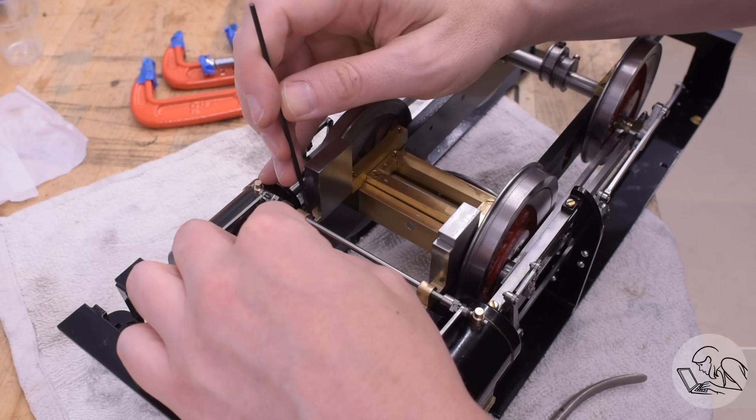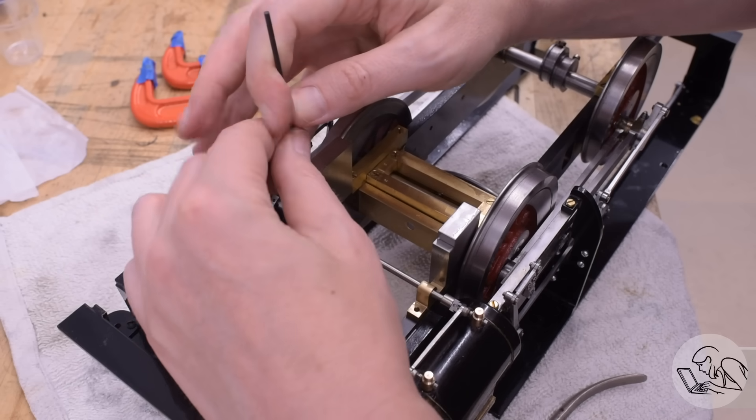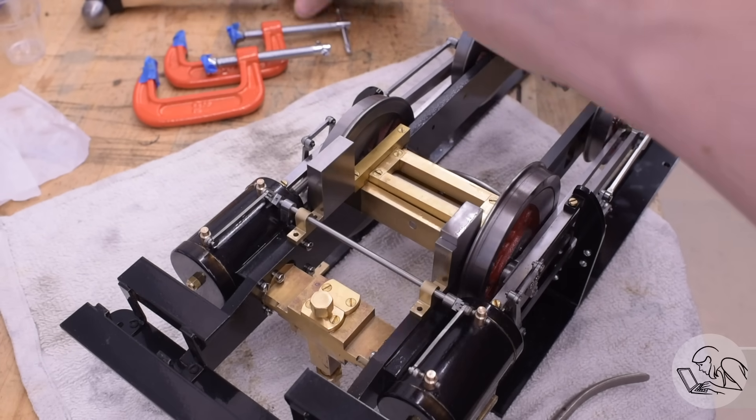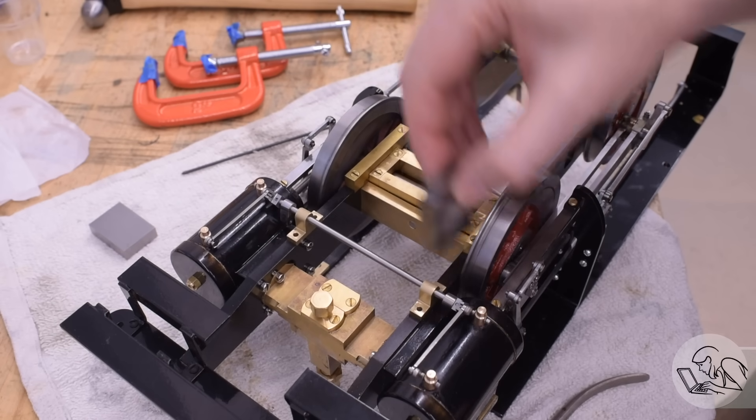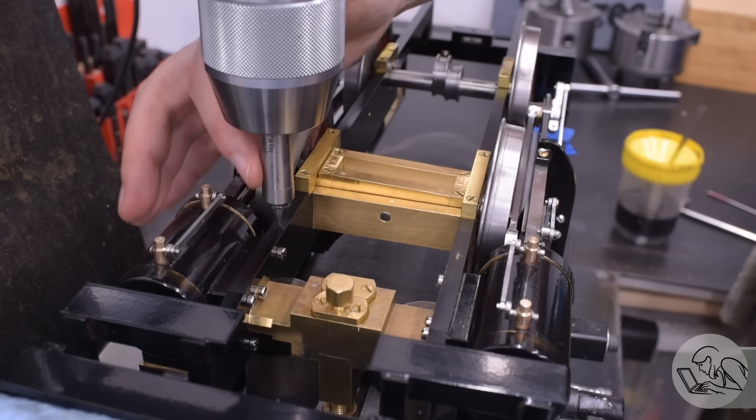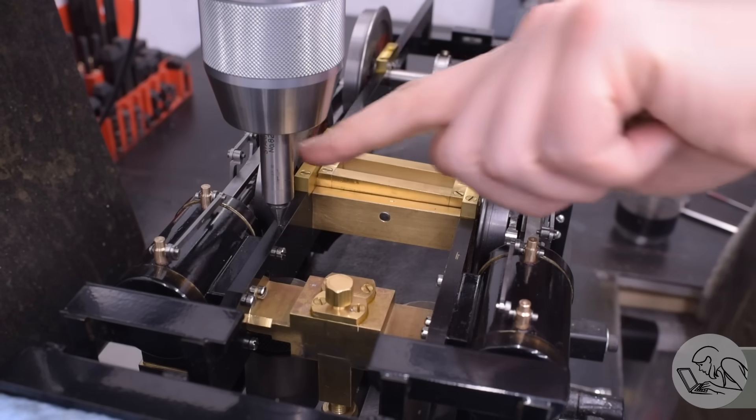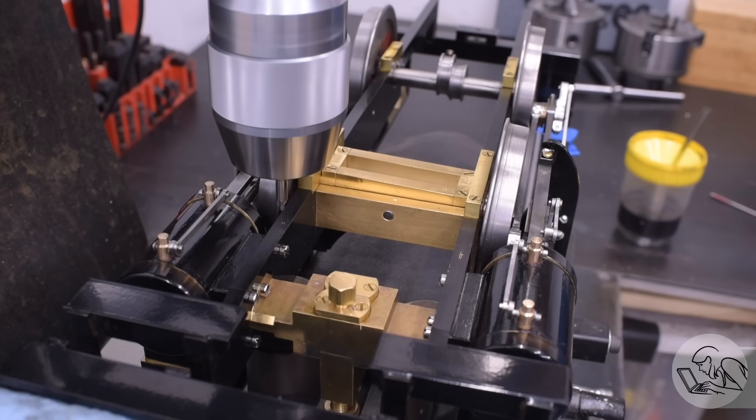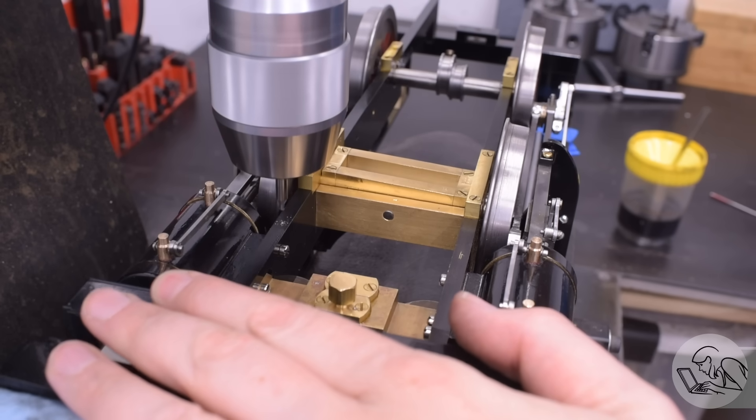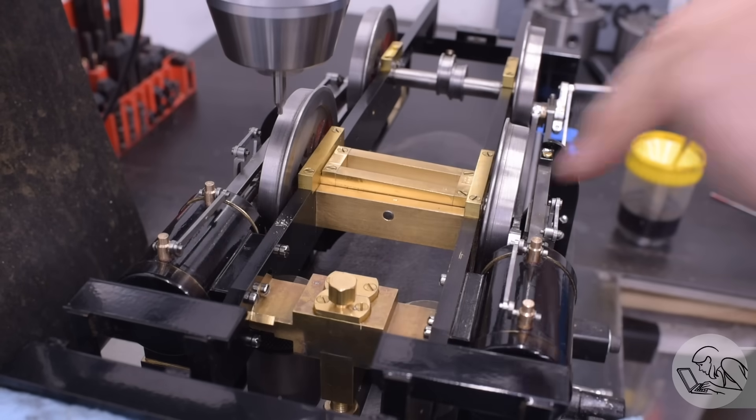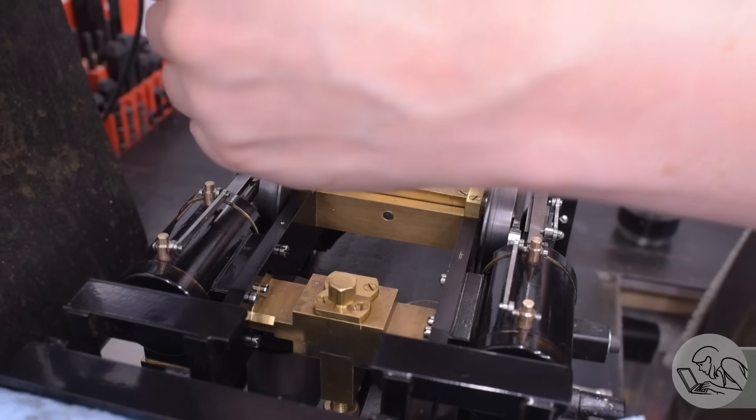Now I can transfer punch one hole on each block. The secret to success when transferring hole patterns is don't get carried away, just do one or two holes at a time. Now I can set this all up in the milling machine. Luckily, my milling machine is big enough that I can fit the entire locomotive on the table. One of the advantages of building in smaller scales. I use the pointy edge of the edge finder to line up on that punch mark, and then center drill, drill and tap these holes.